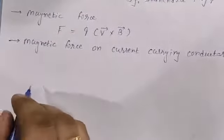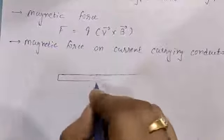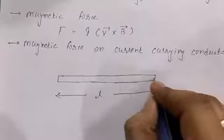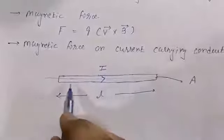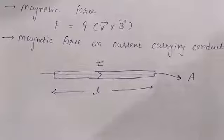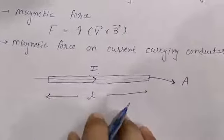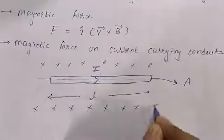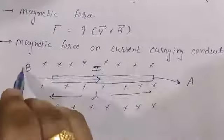Today we will see magnetic force on a current-carrying conductor. Suppose we are having one wire — this is a conductor wire. Suppose it has a length L, cross-section area A, and current I is flowing from this wire. Its length is L, its cross-section area is A, and current I is flowing. We will find the magnetic force on it, and suppose it is placed in a uniform magnetic field.